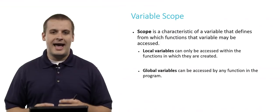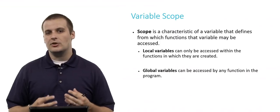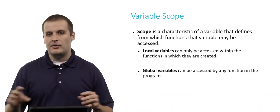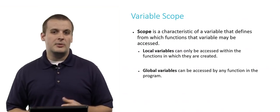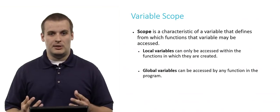Local variables can only be accessed within the functions in which they're created. They can't be accessed by every other function that exists in your program, only the function in which it was created. Global variables, on the other hand, can be accessed by any function in the program.